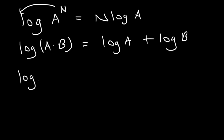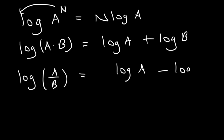And log a divided by b is going to be log a minus log b. Because a is on the top, it's going to have a positive sign next to it. b is on the bottom, so it has a negative sign next to it.